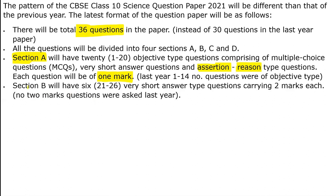Section B consists of six questions — very short type answers carrying two marks each. These things are very, very important. Last year there were no two-mark questions asked, but this year we will have six questions of two marks.